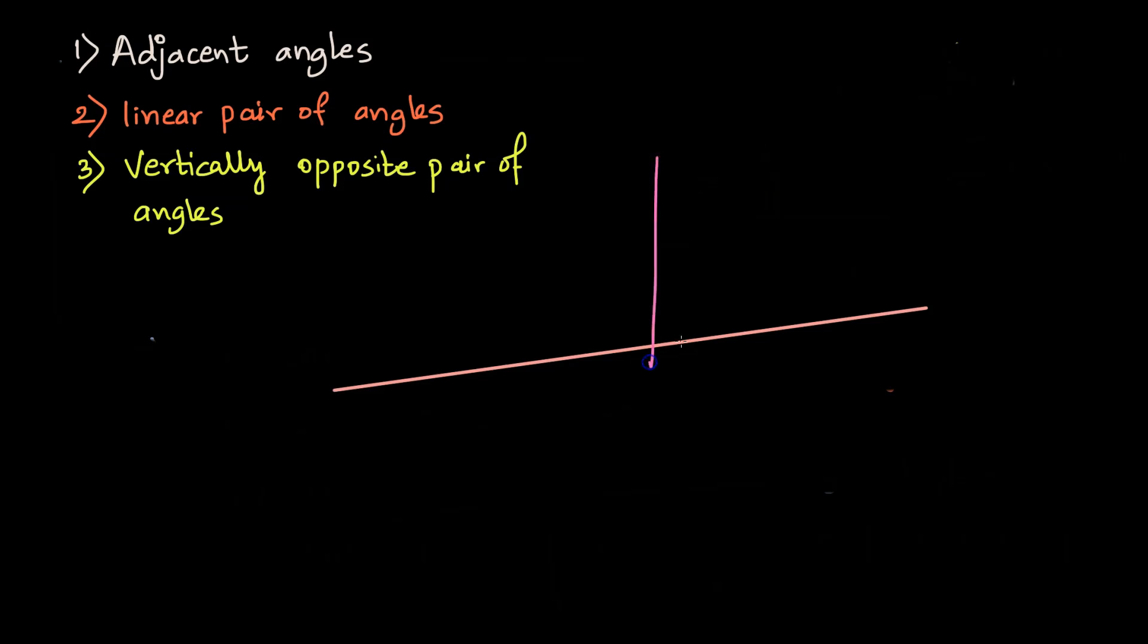So if I have a figure like this, let me put point A, point B, point C and point D. Then angle ABC and angle CBD form linear pair of angles.